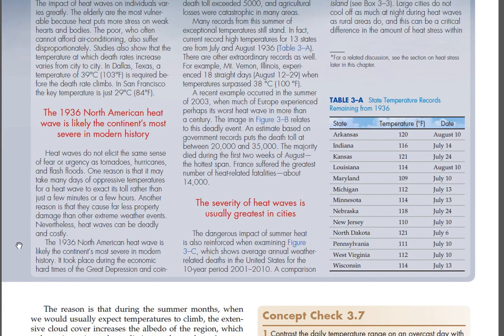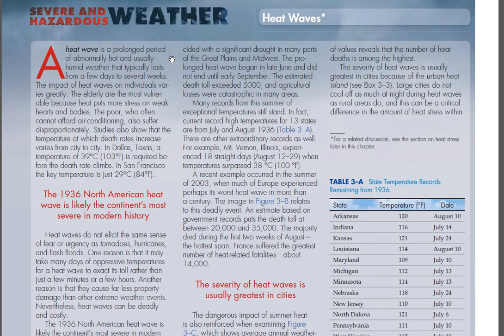The 1936 North American heat wave is likely the continent's most severe in modern history. It took place during the economic hard times of the Great Depression and coincided with a significant drought in many parts of the Great Plains and Midwest. The prolonged heat wave began in late June and did not end until early September. The estimated death toll exceeded 5,000, and agricultural losses were catastrophic in many areas. Many records from this summer of exceptional temperatures still stand — current record high temperatures for 13 states are from July and August 1936 (Table 3A).